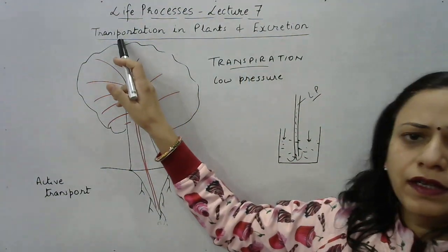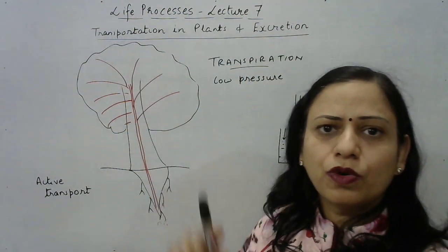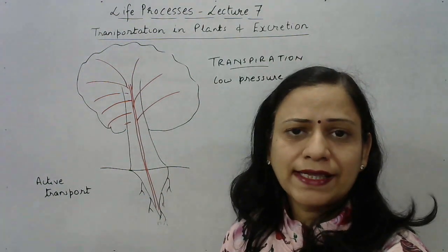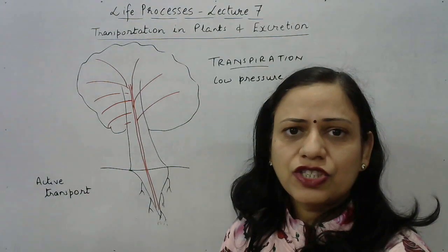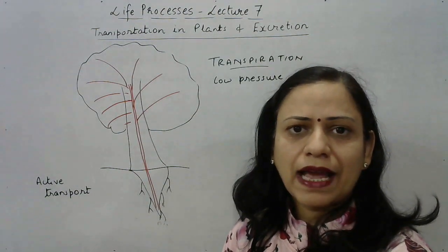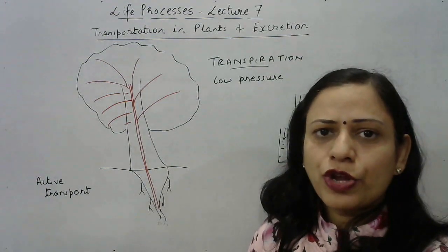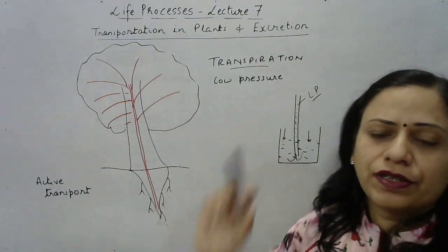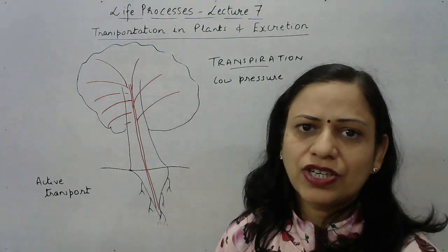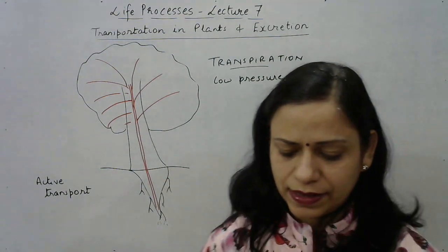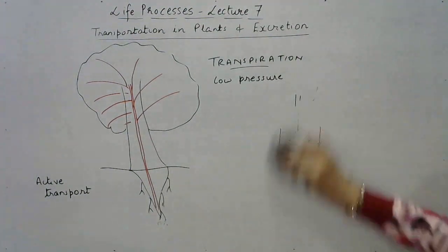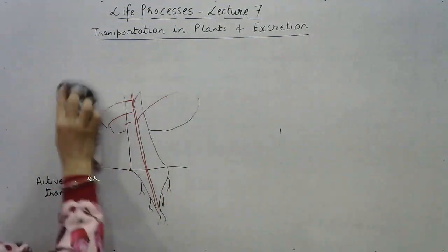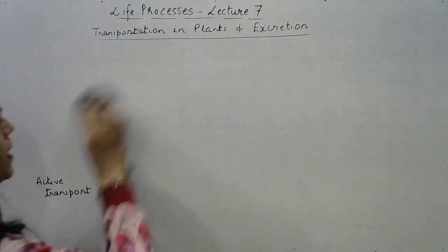With this we have come to the end of transportation both in plants and in animals. Please go through your NCERT and check that we have covered all the topics and revised thoroughly. Now I am going to begin with the fourth and last part of this chapter, that is excretion. First we will be talking about how excretion takes place in plants.